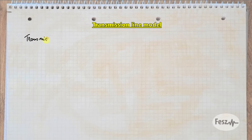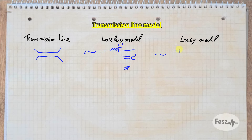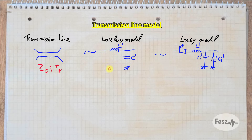First things first, one of the important things to start off with is understanding the lumped element equivalent of a transmission line. In general, we have two basic models to consider: a lossless ideal model, that consists of a series inductance and a parallel capacitance, and a more advanced lossy model, which also contains a series resistance and a parallel conductance. For today's discussion, we can focus on the lossless model.